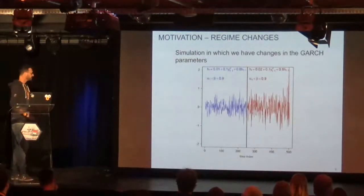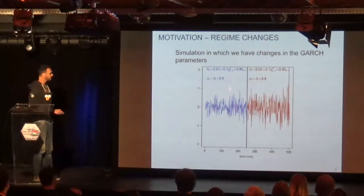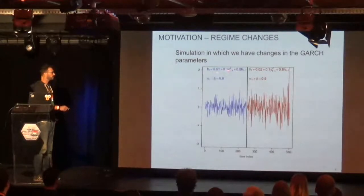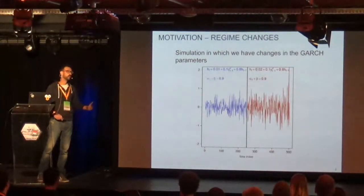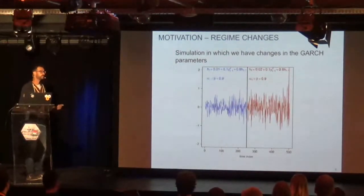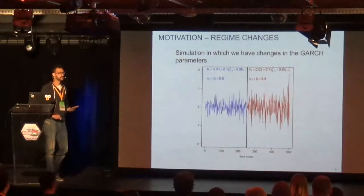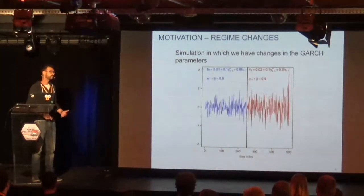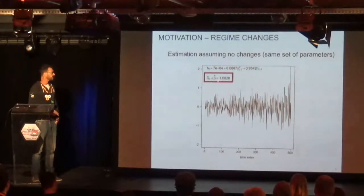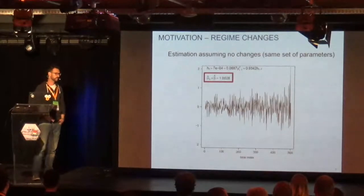Let me give you intuition about that. In these plots, I've simulated a GARCH process. For the first 250 points in blue, I use parameters where the sum is 0.9, which satisfies the covariance stationarity condition — meaning volatility is not exploding. Then I purposely put a break in the process with another set of parameters for the second half. If you give this dataset to someone without telling them about the break and they estimate a single model, the estimate would be above 1, meaning an integrated GARCH process — likely to bias the forecast.